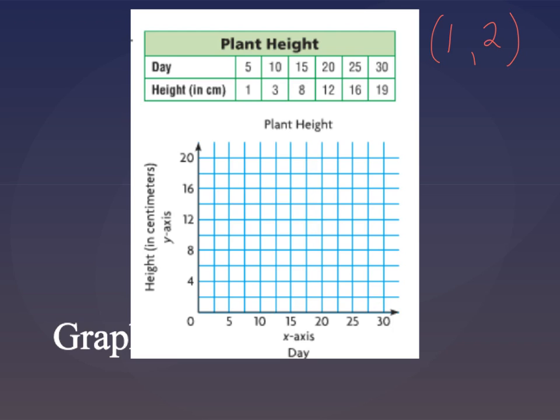Alright, so let's start by taking the first day on our graph which is day 5 and on our coordinate plane here we can tell that the x-axis represents the day so this is going to be the x and the y-axis represents our height so this is going to be the y. So let's make our ordered pairs. Starting with day 5, our first ordered pair is going to be 5, 1 because we can see that the days are x and the height is y.